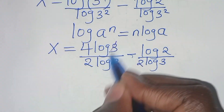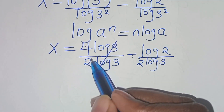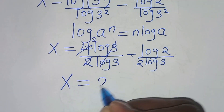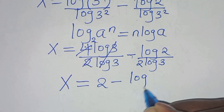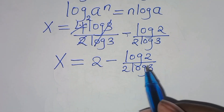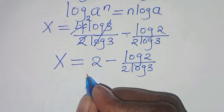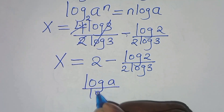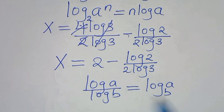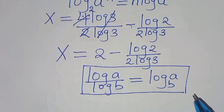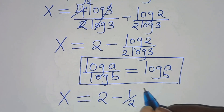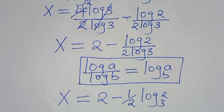So from here, let's simplify: log 3 over log 3 cancels, and we have 4 divided by 2, which is 2. Therefore, we have that x is equal to 2 minus log 2 over 2 log 3. The next step is that log 2 over log 3 is in the form of log a over log b, which we can express as log a to base b. Applying this logarithm property, we have that x is equal to 2 minus one half log 2 to base 3.